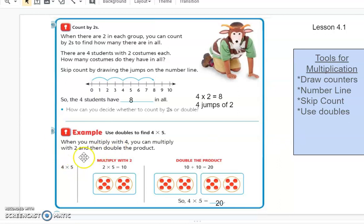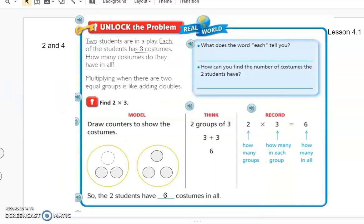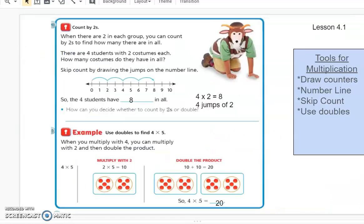Okay so for today just to recap we learned a few different tools that we could use for multiplication. We drew counters in groups. We had our equal groups and we used a number line where we thought instead of four groups of two we thought of it as four jumps of two. So we kind of essentially were skip counting here. I added skip counting here because that kind of goes along with our number line and then we can use doubles.